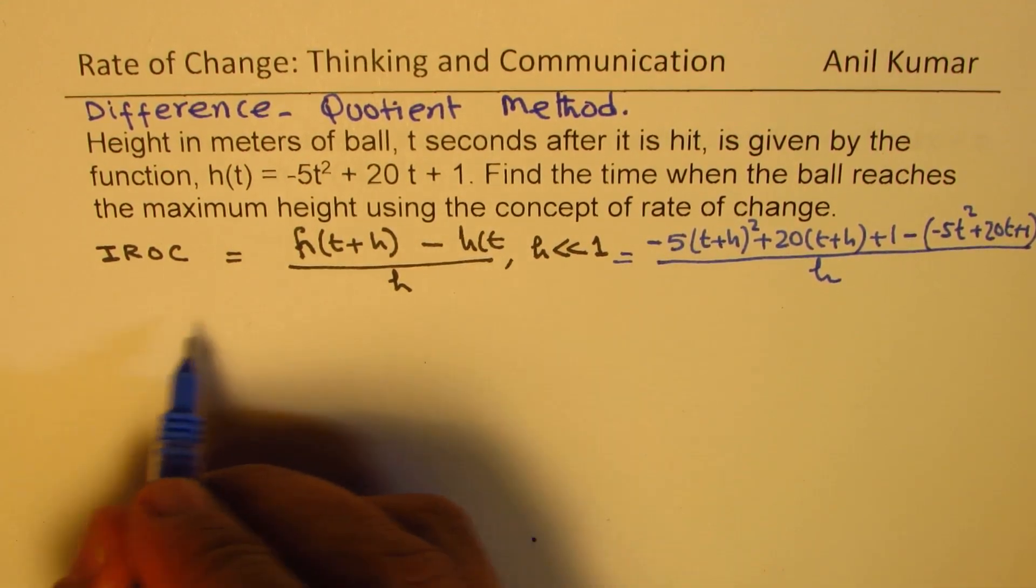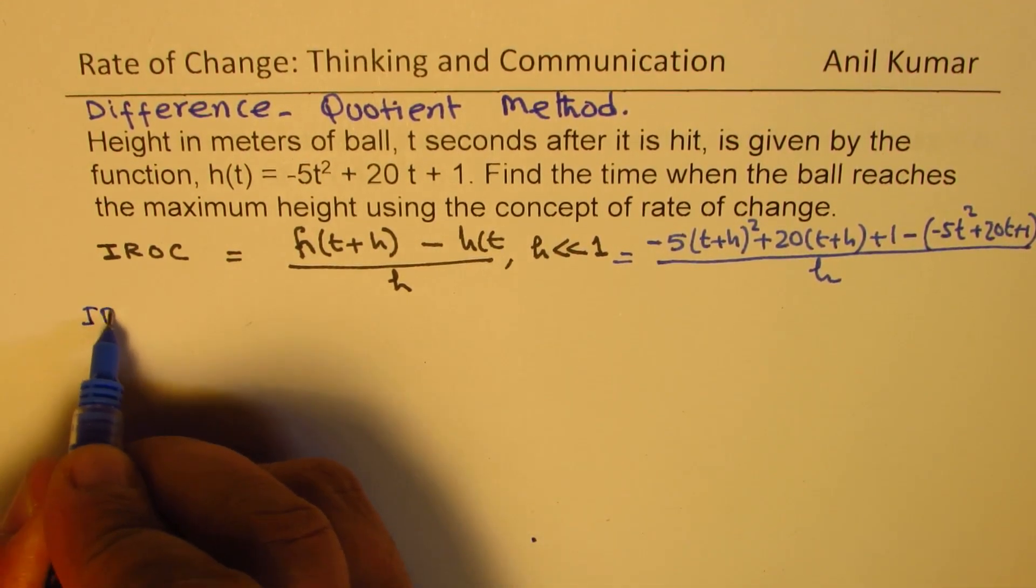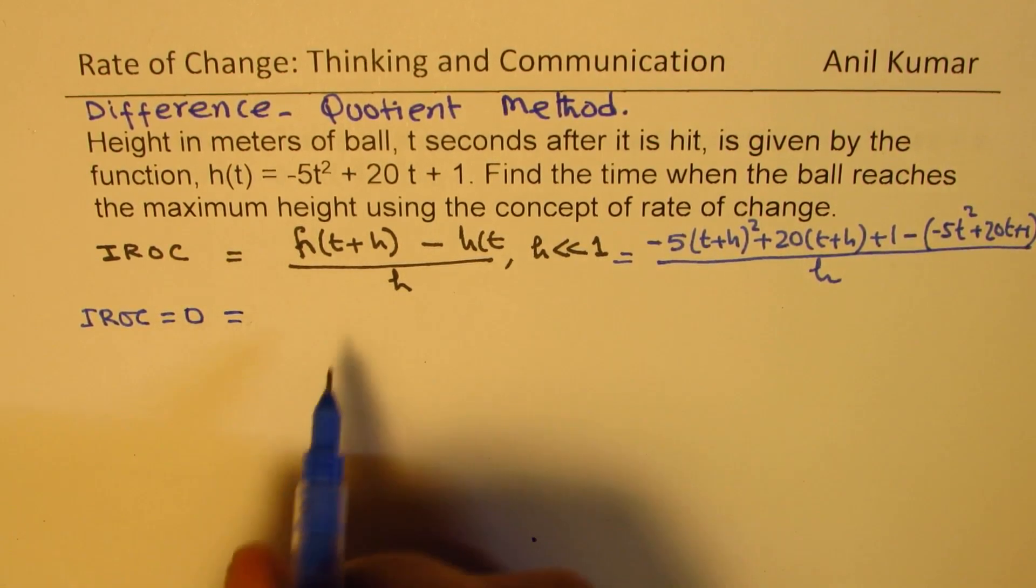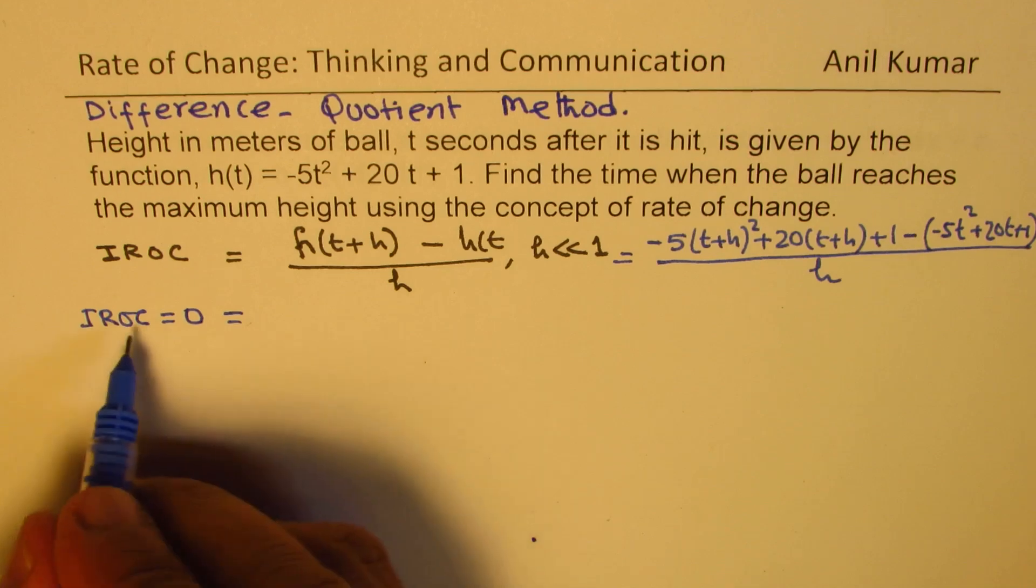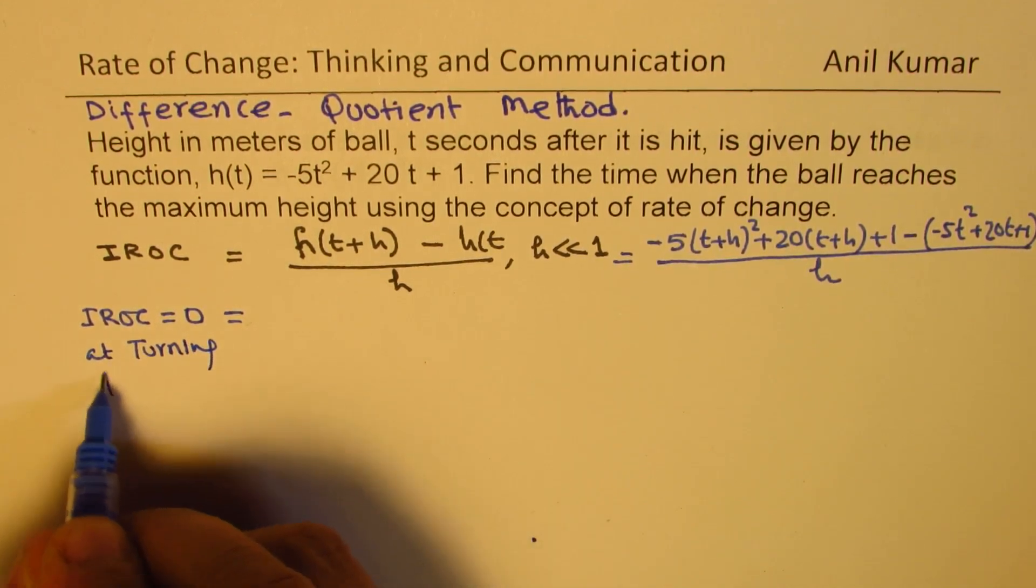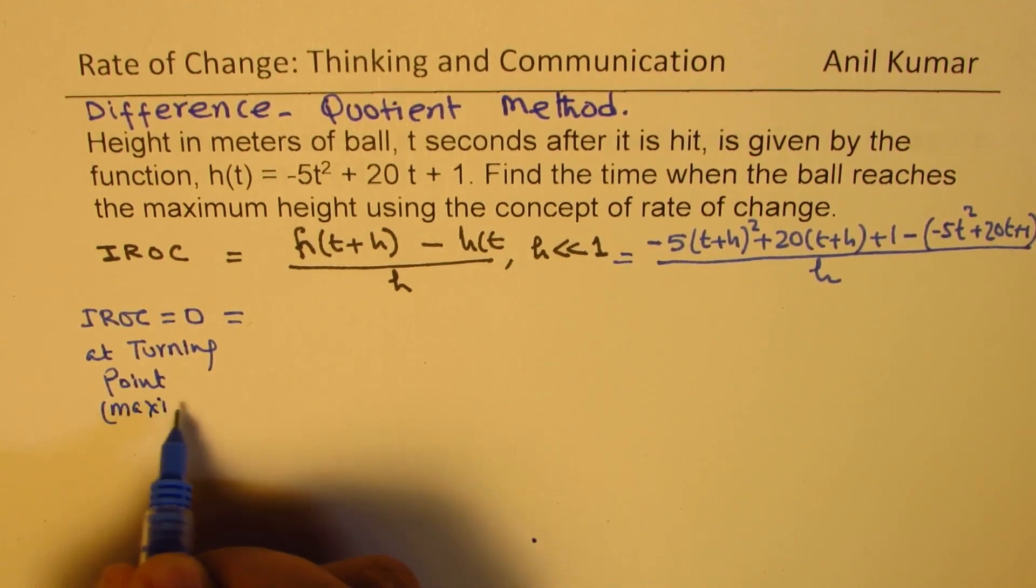Let us expand and simplify. So we get instantaneous rate of change, that should be equal to 0 at the turning point, right? Equals to 0 at turning point, which is the maximum for us. Clear?